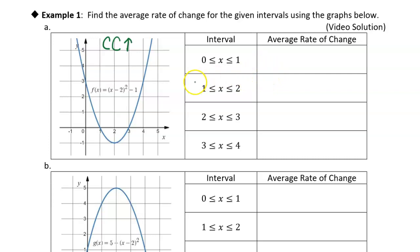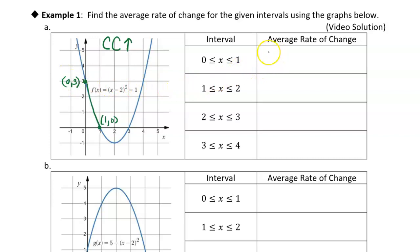Let's look at the average rate of change over different intervals for the concave up function. Over the interval from 0 to 1, we have the points (0, 3) and (1, 0). The average rate of change is (0 − 3) / (1 − 0), which gives us negative 3.